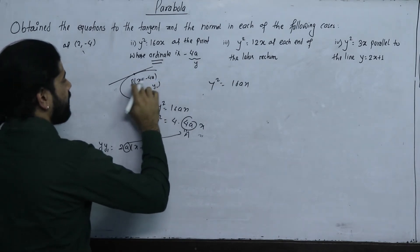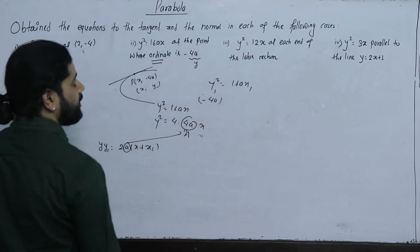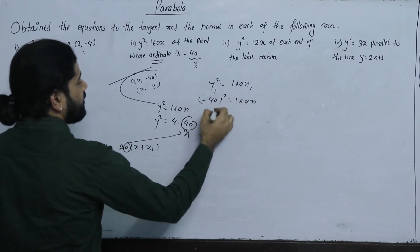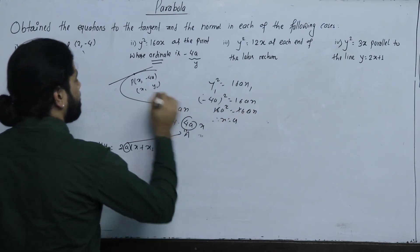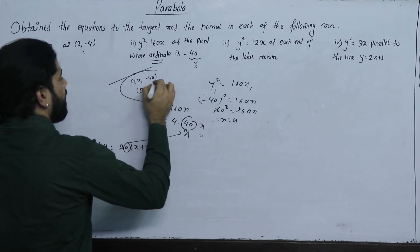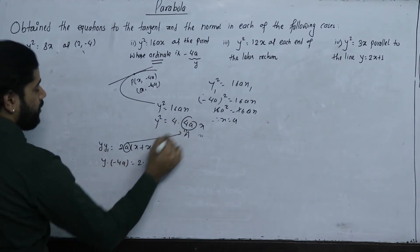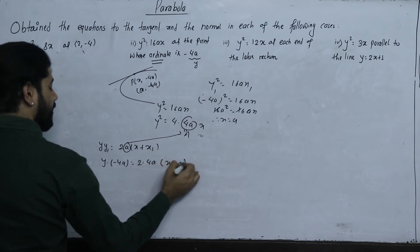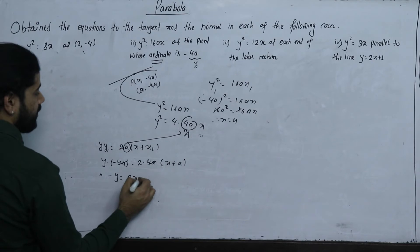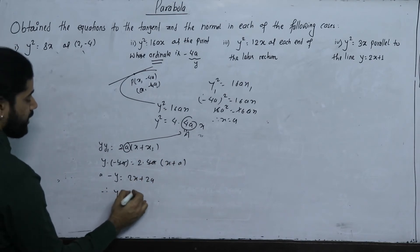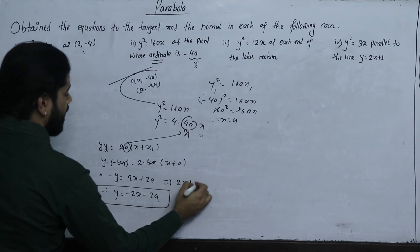X minus 4A, and x1, and y1 squared. Minus 4A, y1 squared equals this. The square equals 16AX, and 16A squared equals 16AX. 16 by 16 cancel, x equals to a. A minus 4a, y into minus 4a equals to 2a equal to 4a. X plus x1, 4a cancel. Minus y equals to 2x plus 2a, and normally y equals to minus 2x minus 2a. Then y equals to 2x plus y plus 2a.